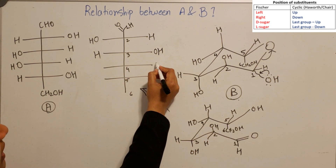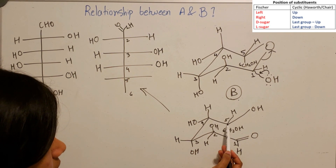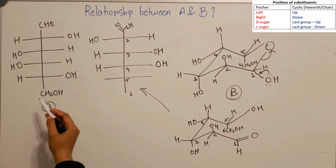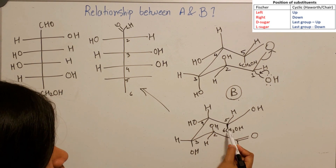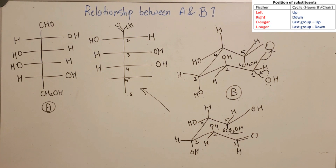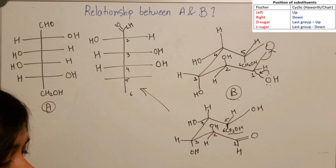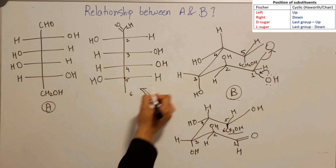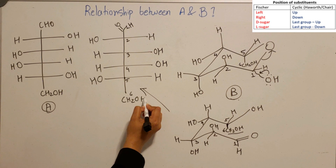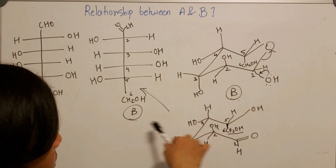At carbon five, the CH2OH group is on the downside in the cyclic form, which — according to the table — means it comes from an L sugar. Therefore, at this carbon the hydroxy group is on the left-hand side and H is on the right, with CH2OH below. This is the Fischer form obtained from the cyclic form of B.